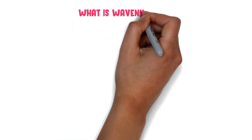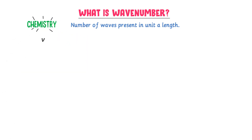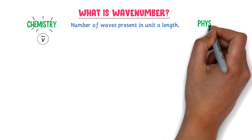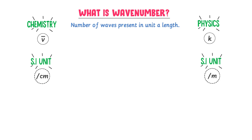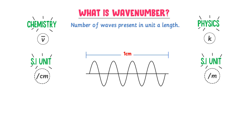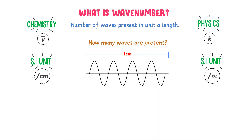Now let me teach you what is a wave number. Wave number is the number of waves present in a unit length like one centimeter or one meter. In chemistry, wave number is denoted by V, while in physics it is denoted by K or sometimes N. Its SI unit is per centimeter or per meter. Consider wave motion in one centimeter length — wave number shows how many waves are present in this one centimeter length.